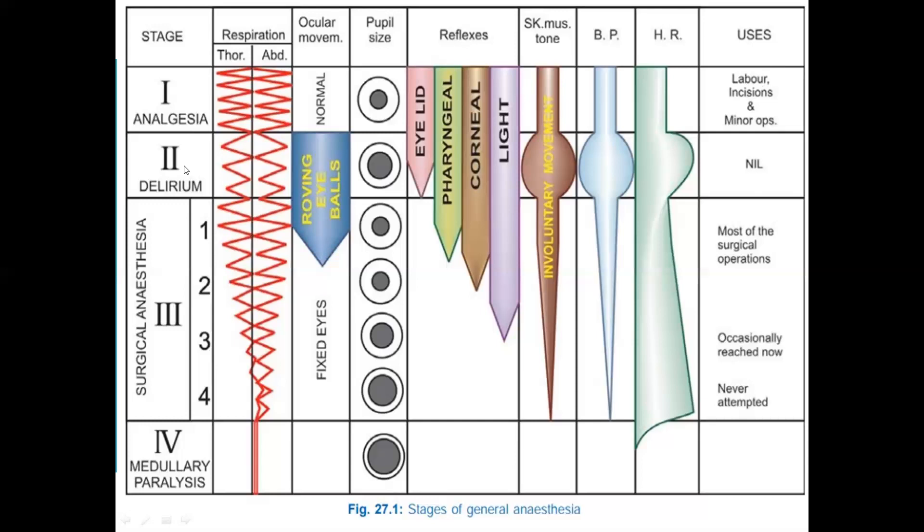Stage 2 is the stage of excitement or delirium. It starts from loss of consciousness to the onset of automatic breathing. The eyelash reflex disappears, but other reflexes remain intact, and coughing, vomiting, and struggling may occur.